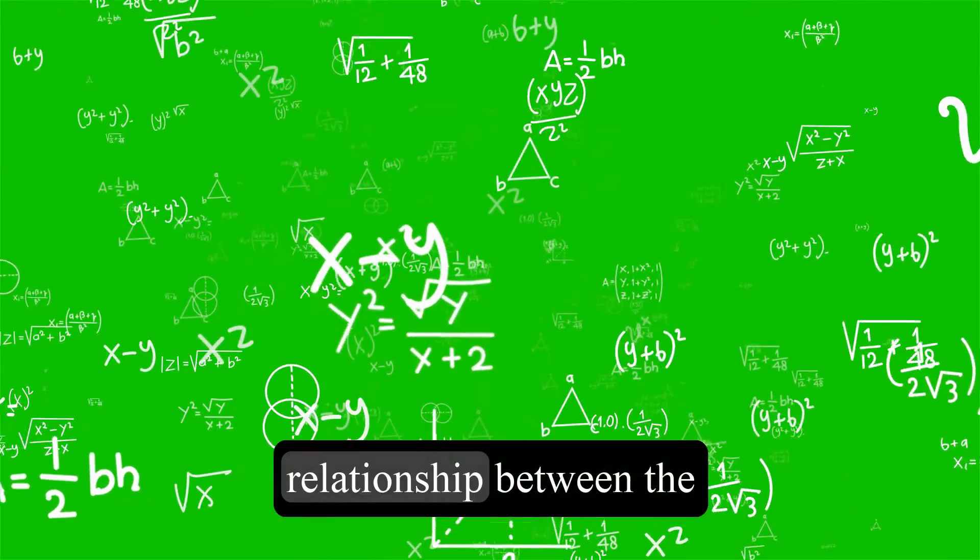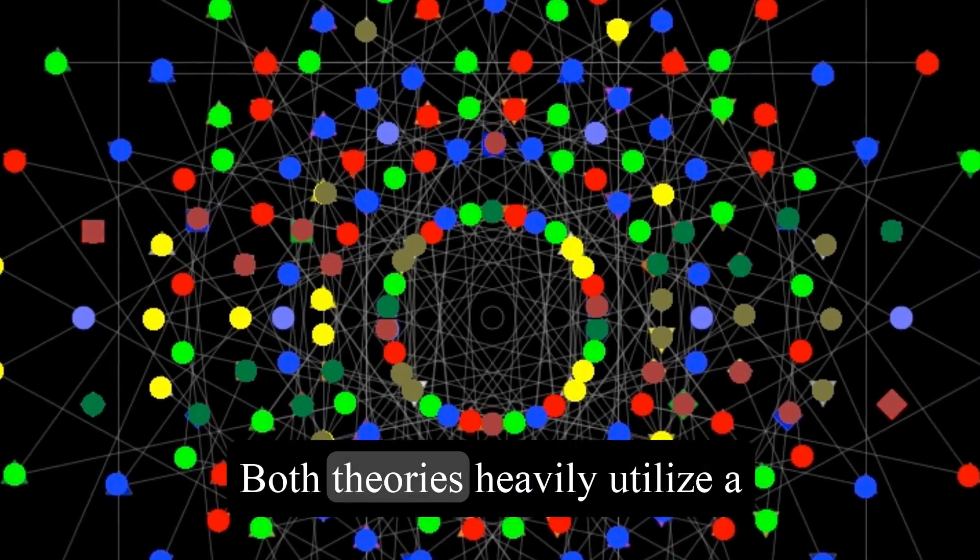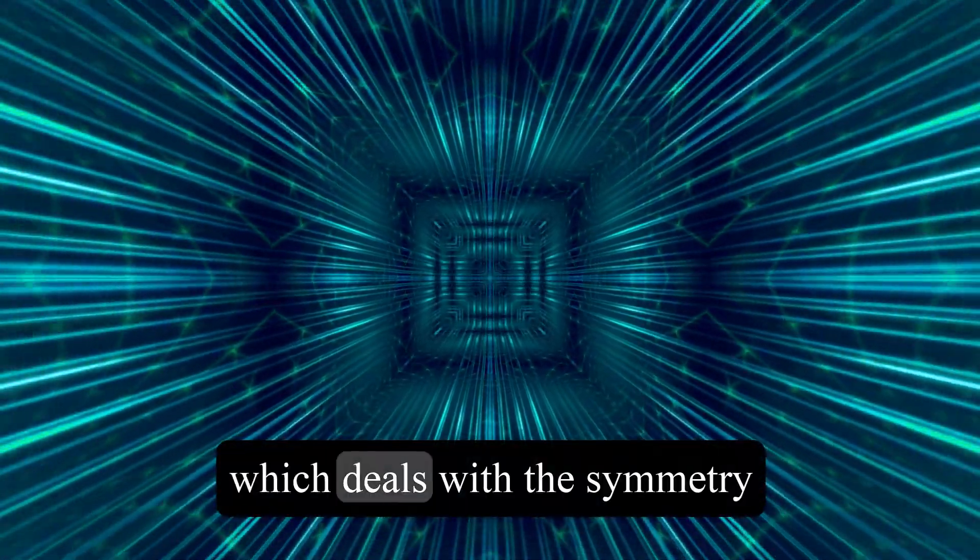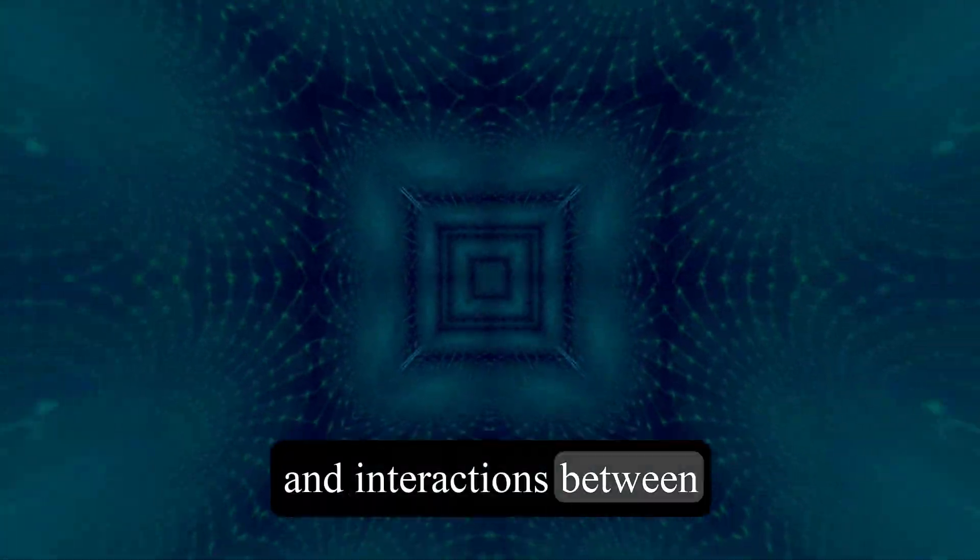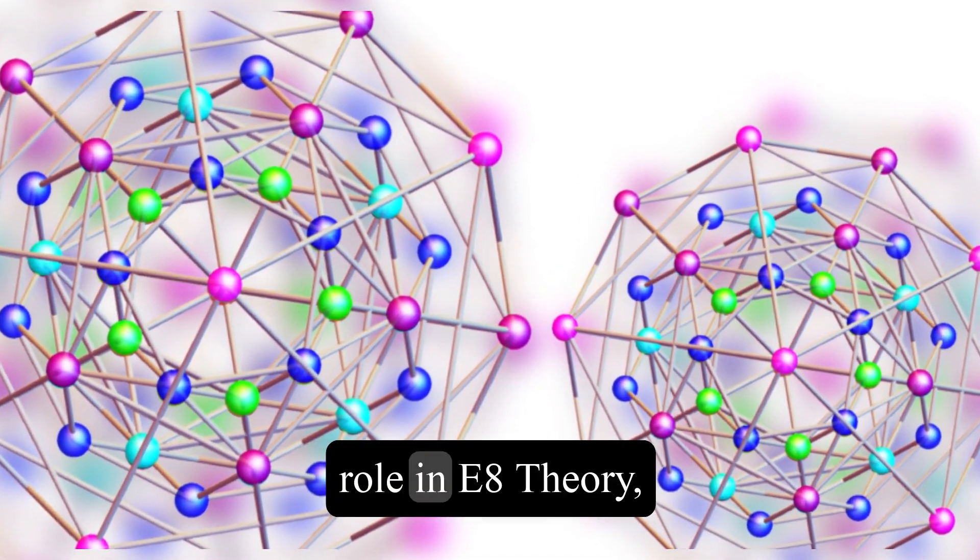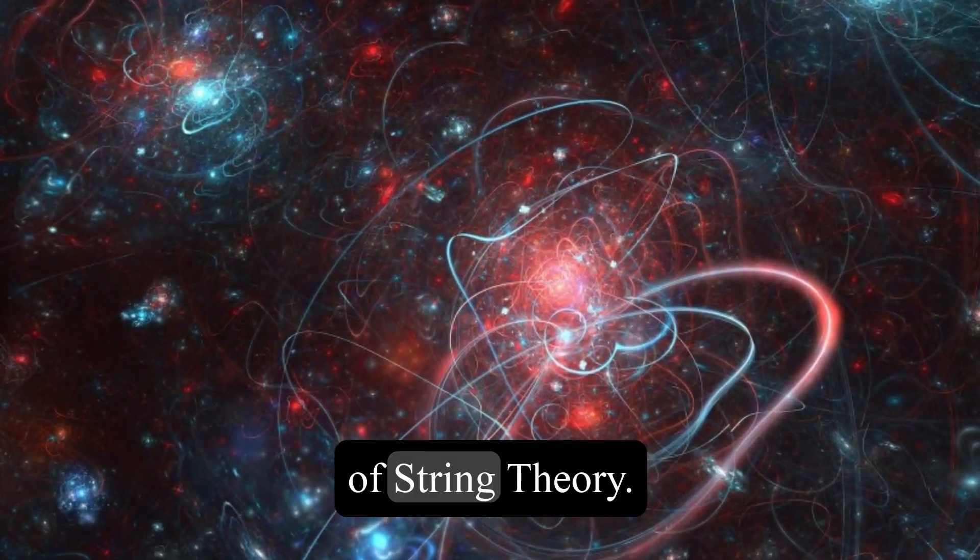Furthermore, there is an intriguing relationship between the mathematics used in string theory and E-8 theory. Both theories heavily utilize a branch of mathematics called group theory, which deals with the symmetry and interactions between objects. In fact, the E-8 Lie group, which plays a central role in E-8 theory, has been found to have a deep connection with the mathematics of string theory.